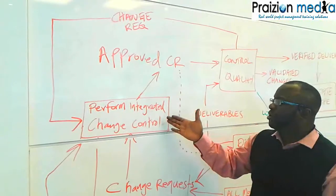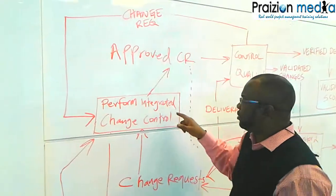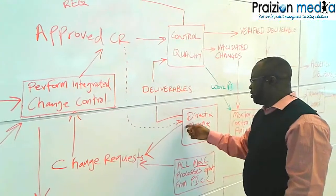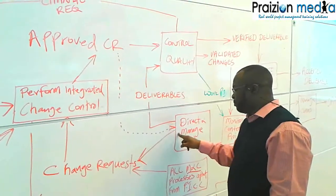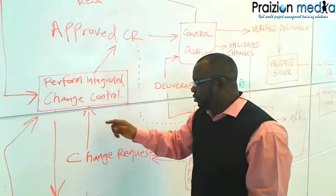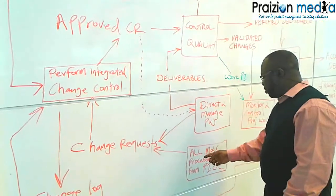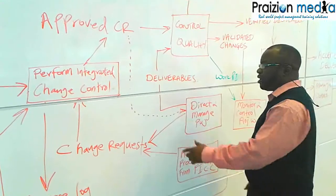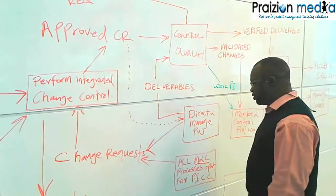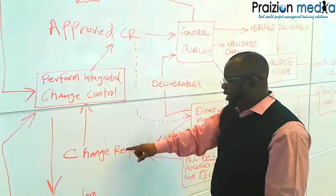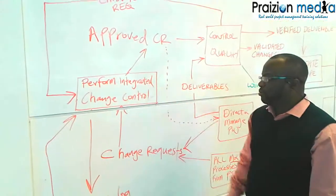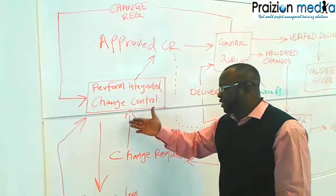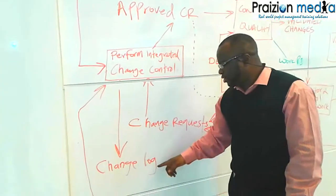This is not the only place a change request could come from. We could also have change requests from where the deliverable originated from. You could also have change requests from all monitoring and controlling processes, of course apart from Perform Integrated Change Control. And all those change requests go into the Perform Integrated Change Control process. Remember that every change request should be logged into the change log.